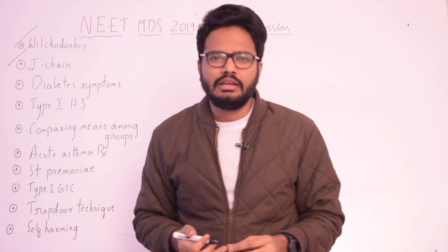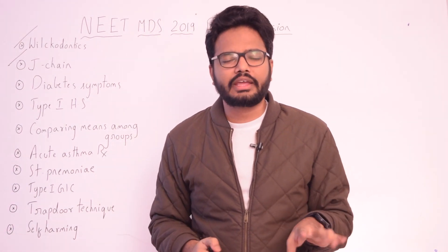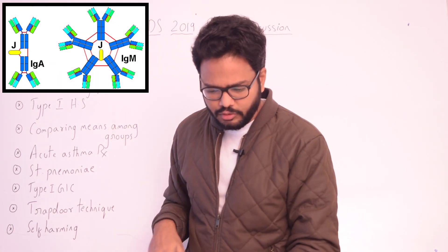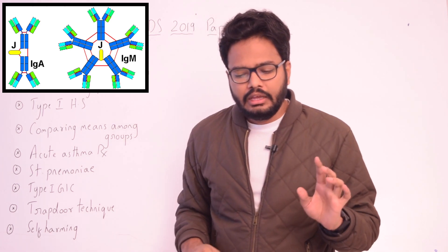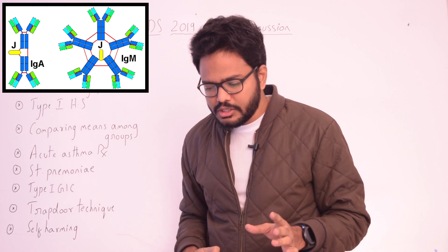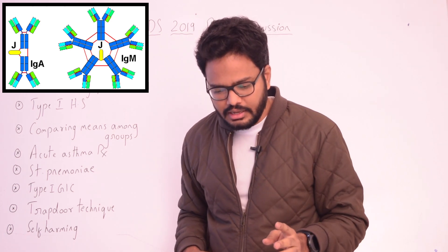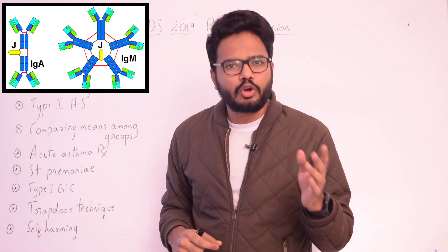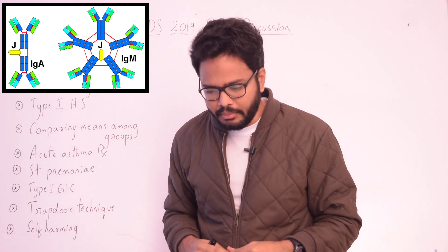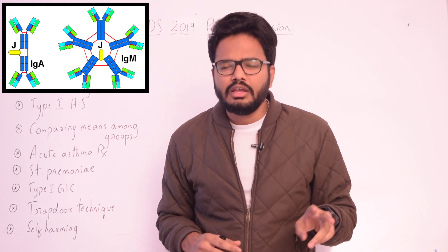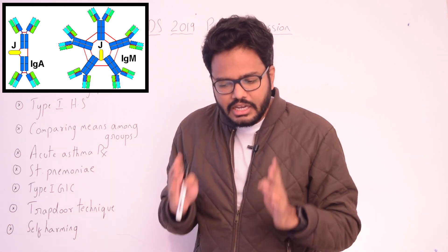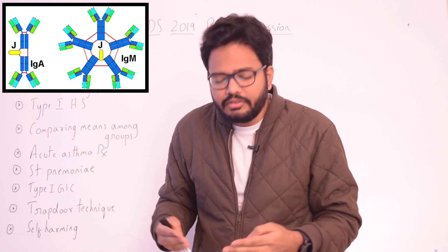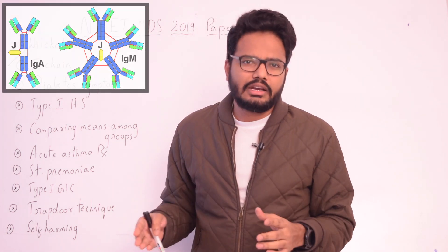Moving to the next topic: J chain. The letter J stands for 'joining,' and this joining chain is present in the structure of IgM and IgA. The joining chain is a small polypeptide expressed by mucosal and glandular plasma cells. It regulates polymer formation of immunoglobulin A and immunoglobulin M. IgA is mostly present as a dimer, whereas IgM is a pentamer. J chain incorporation into IgA and IgM bestows these antibodies with several salient features.